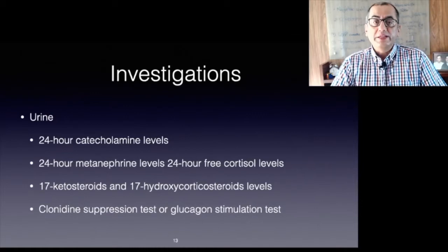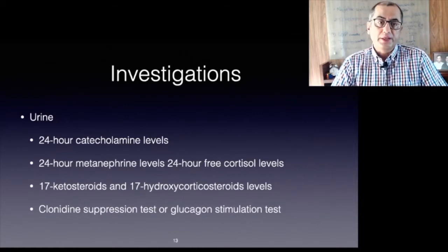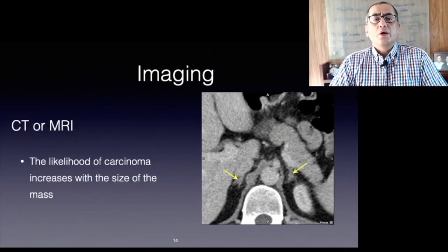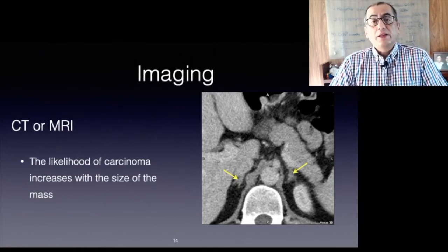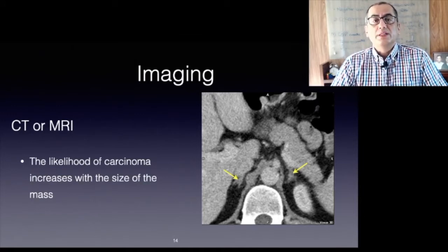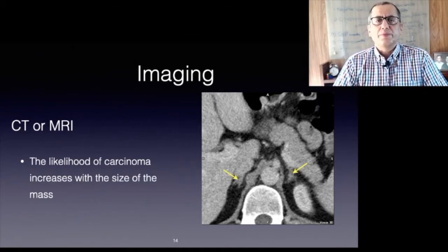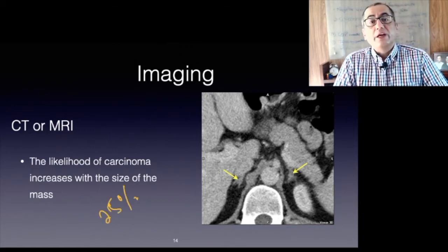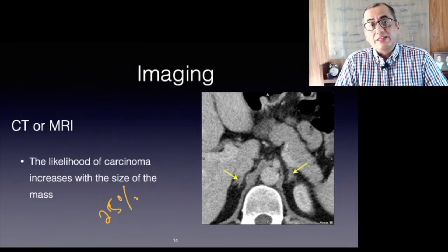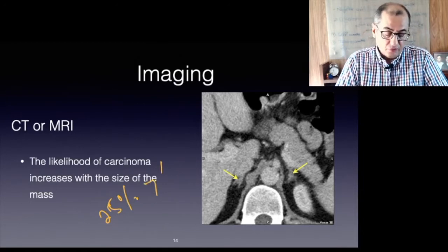Cross-sectional imaging such as CT or MRI should be performed in all patients with adrenal masses. The likelihood of an adrenal mass being an adrenocortical carcinoma increases with the size of the mass — there is a 25 percent likelihood of malignancy if it is greater than four centimeters.